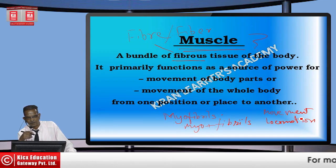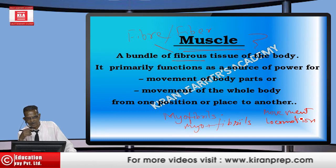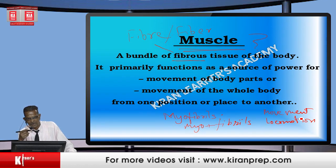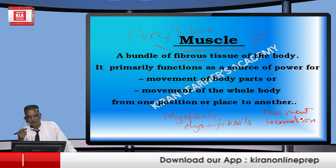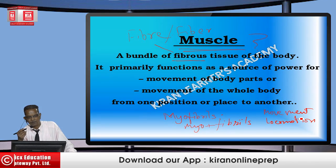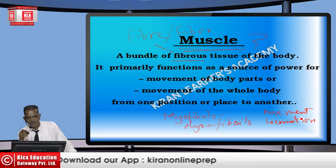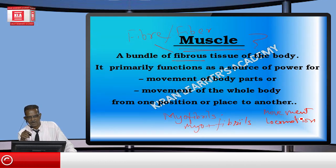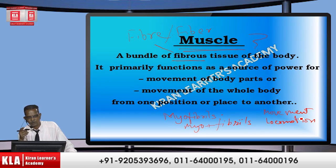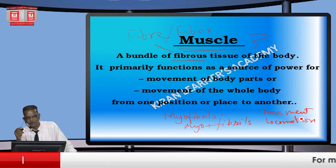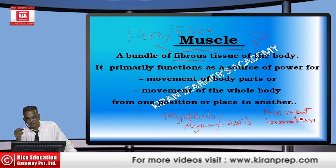A locomotion is a result or consequence of movement. Different body parts move together, coordinate together, and impart locomotion. But if I say a given movement is a locomotion, I can't — because all movements cannot be considered as locomotion, as the whole body may not move from one position to another; it may be just a body part.